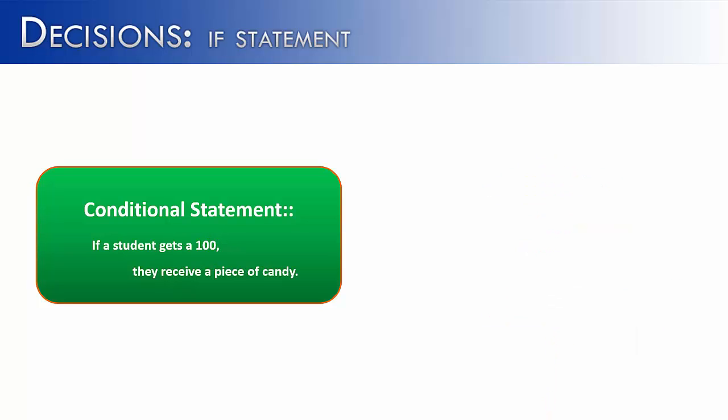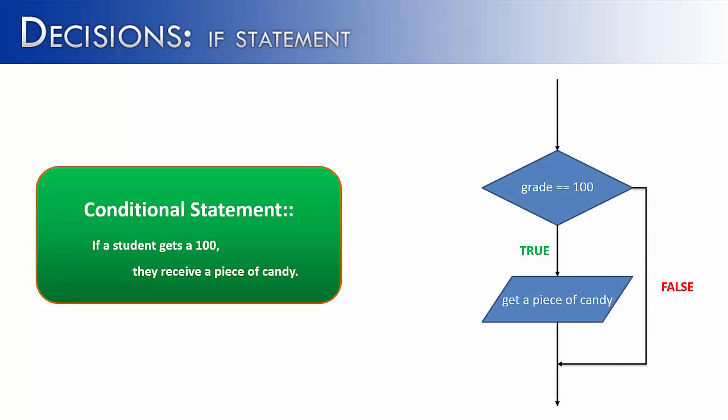Let me give you another example of a conditional. If a student gets a hundred on a test or exam, they're going to receive a piece of candy. I've written out the flowchart and what it would look like. But instead of just talking you through the program, I want to show you what it would look like in code.